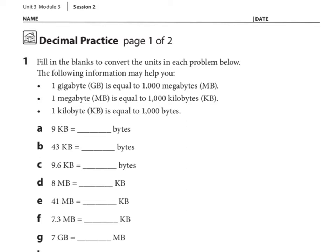Number 1 says, fill in the blanks to convert the units in each problem below. The following information may help you: 1 gigabyte is equal to 1,000 megabytes; 1 megabyte is equal to 1,000 kilobytes; and 1 kilobyte is equal to 1,000 bytes.